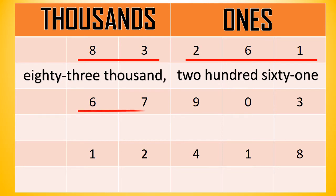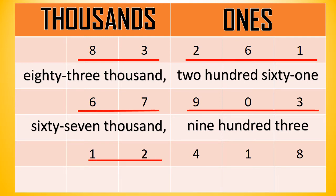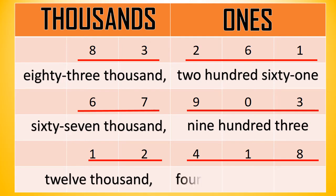How about the next number? That's 67,903. Very good. And how do we write this number in words? This is how we write 67,903. How about the last number? How do we read this one? That's 12,418. And how do we write 12,418 in words? This is 12,418. Very good.